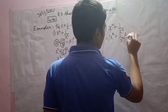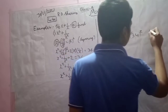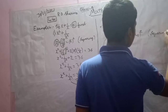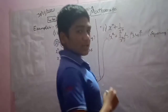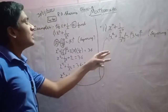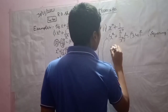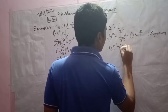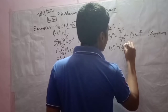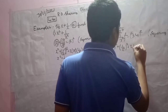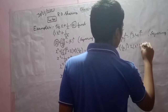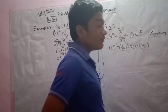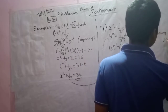Similarly, we will square both sides here too. Using the identity a plus b whole squared, we can write x squared whole squared plus 1 divided by x squared whole squared plus 2 times x squared times 1 divided by x squared equals 34 squared. Let us quickly find 34 squared, which is 1156.